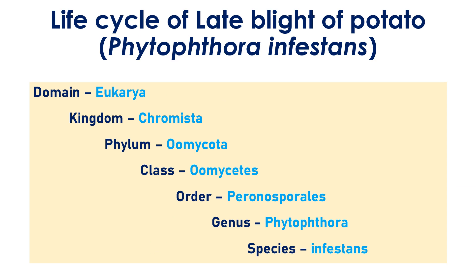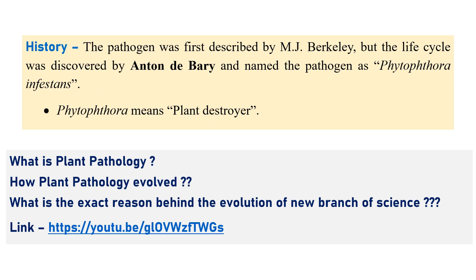Now we'll see the life cycle of Phytophthora infestans in an overall view. It comes under domain Eukarya, kingdom Chromista, phylum Oomycota, class Oomycetes, order Peronosporales, genus Phytophthora, and species infestans. The pathogen was first described by M.J. Berkeley, but he didn't know it was a Phytophthora genus or fungus. The life cycle was discovered by Anton de Bary, who named the fungus Phytophthora infestans.